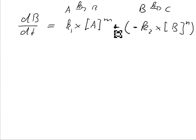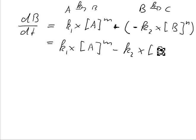And of course this gives us a minus, so we can write equals k1 times A to the power of M minus k2 times B to the power of N. And that is our rate of change for B.